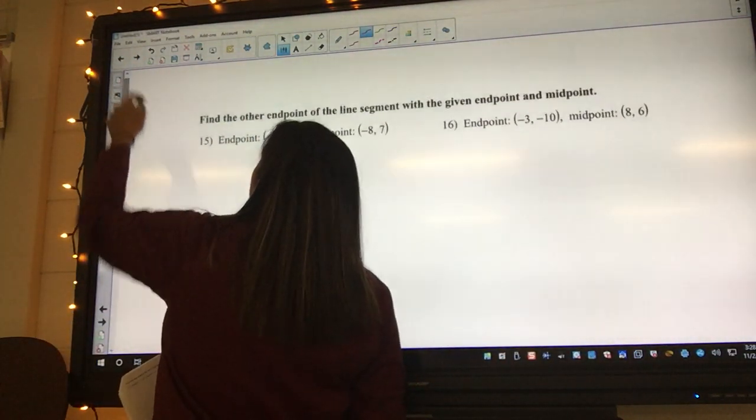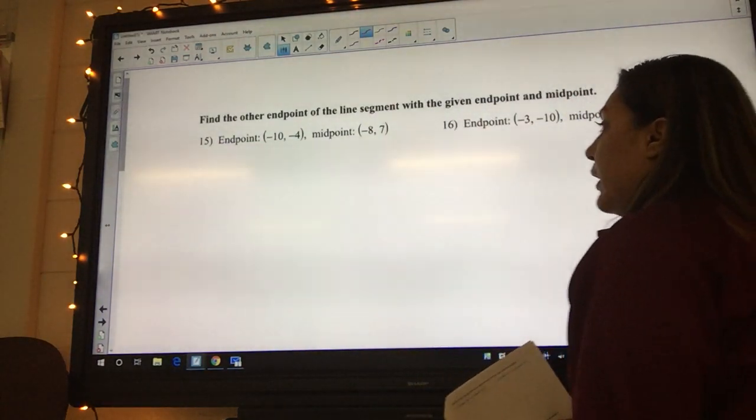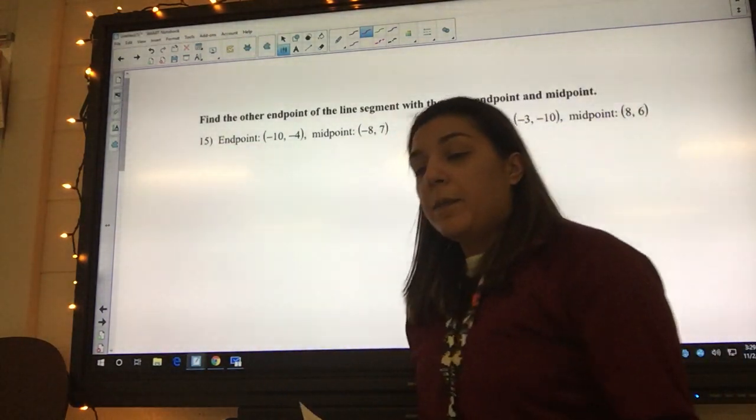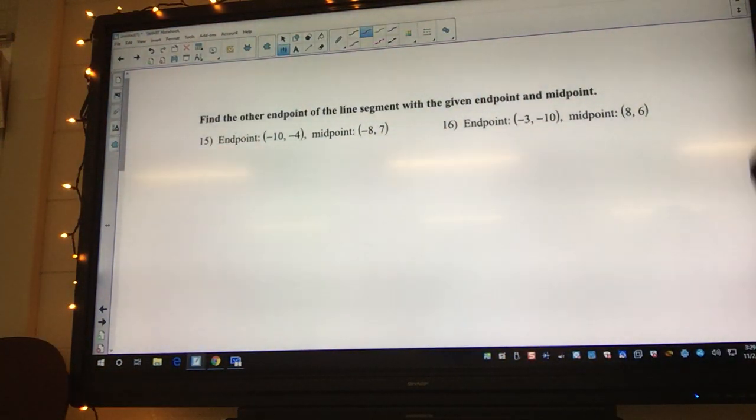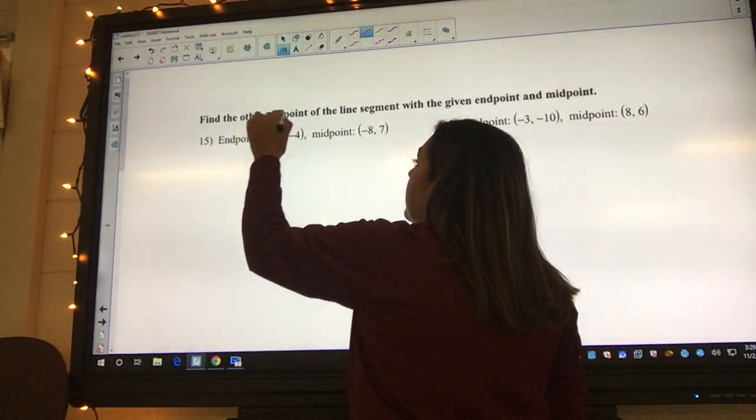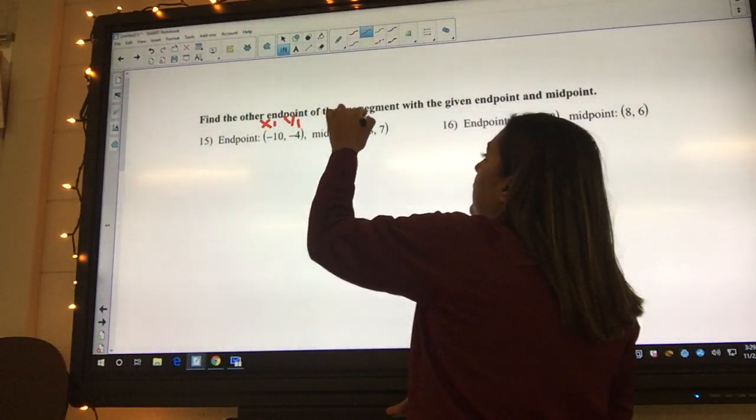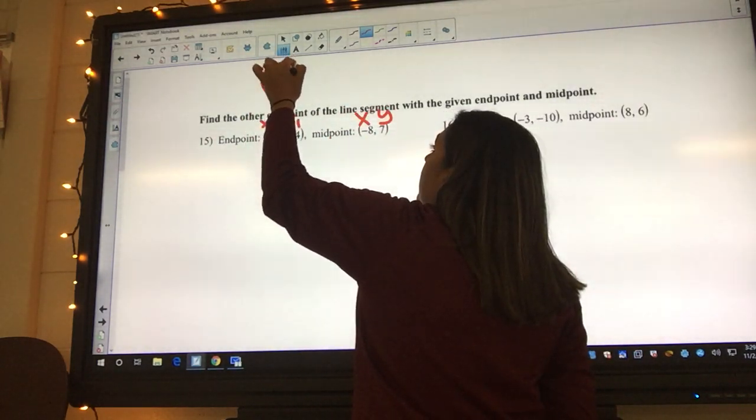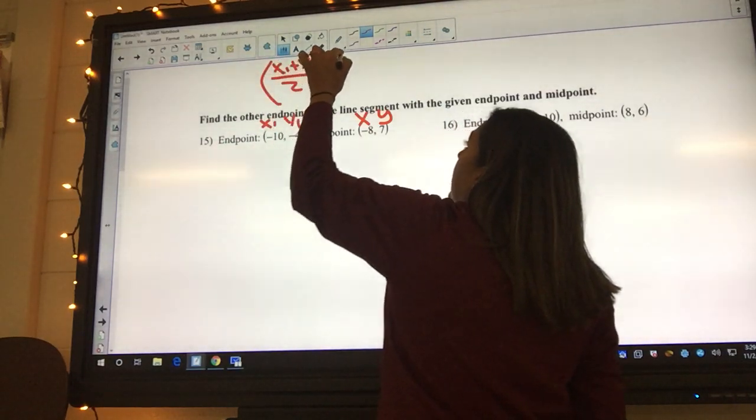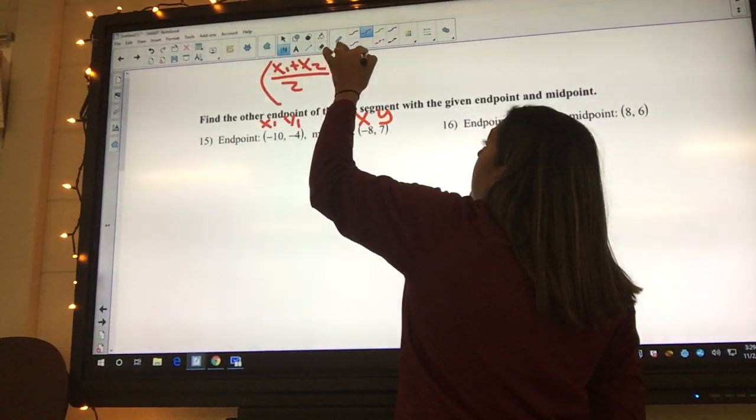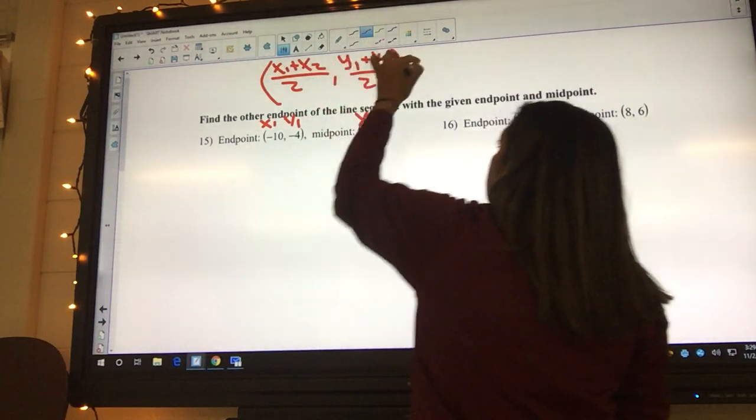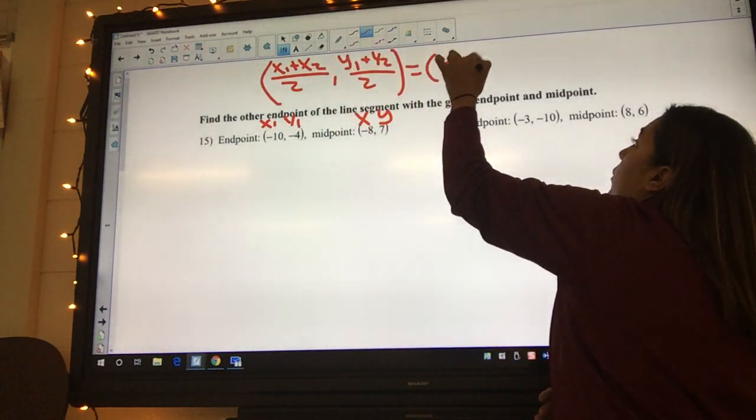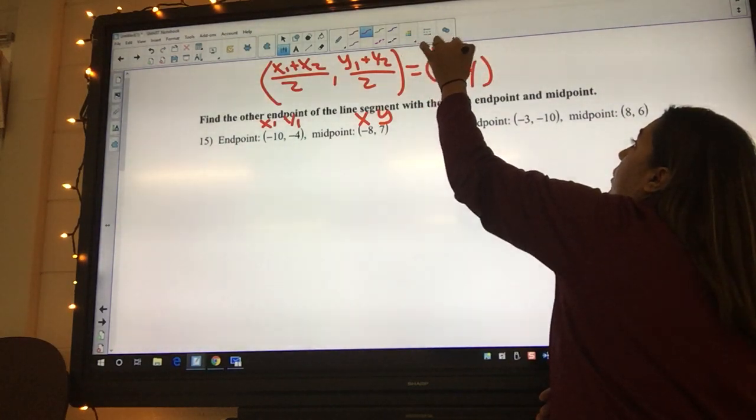15 is about finding the other endpoint. So this is the one where we know our midpoint and we know one endpoint of the line segment. We want to find the other endpoint. So we're going to go ahead and label x sub 1, y sub 1, and we know our midpoint is labeled big X, big Y. So we really got to use the midpoint formula: x sub 1 plus x sub 2 over 2 equals, or comma, y sub 1, y sub 2 over 2 equals big X, big Y. And this is our midpoint.